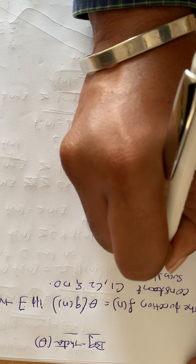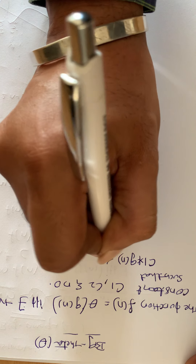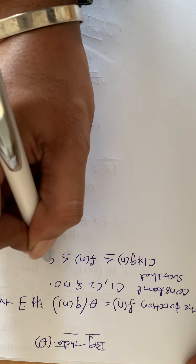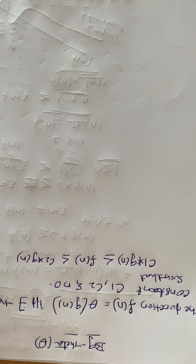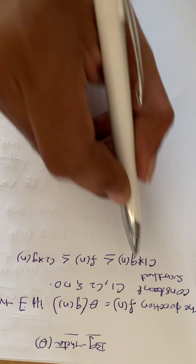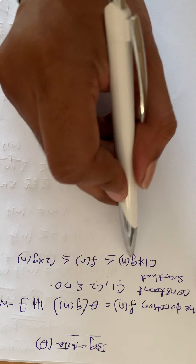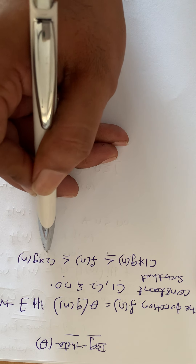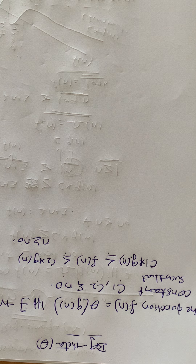Such that c1·g(n) ≤ f(n) ≤ c2·g(n). This is the main definition. Let f(n) be the time complexity of an algorithm. The function f(n) is said to be Θ(g(n)) if and only if there exist positive constants c1, c2 and a non-negative integer n₀ such that c1·g(n) ≤ f(n) ≤ c2·g(n) for all n ≥ n₀. This is the main definition of Big Theta.